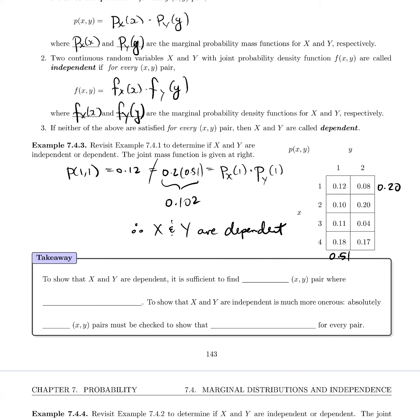So that is what the takeaway tells us, that to show that X and Y are dependent, it's sufficient to find a single, just one, just one (x,y) pair where that relationship that the joint function is the product of the marginals, where that fails to be true. To show that X and Y are independent is much more onerous, however, because absolutely all the (x,y) pairs have to be checked to show that this relationship indeed does hold, so that it is equal to the product of the marginals for every (x,y) pair.